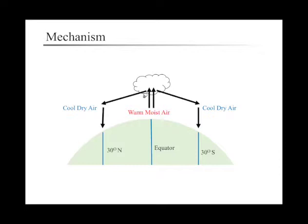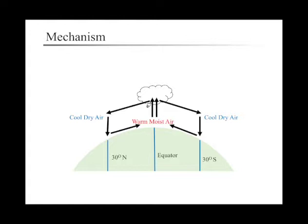As it sinks, it warms adiabatically, decreasing its relative humidity. Air near the surface will then flow toward the low-pressure equator, replacing the rising air. Because of Coriolis force, it also goes in a curve. So eventually, the Hadley circulation is complete.